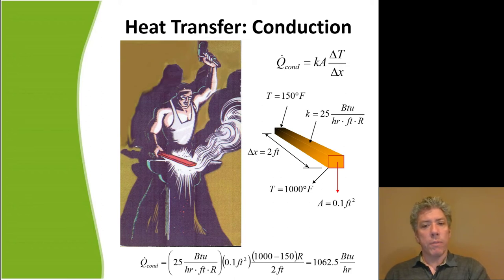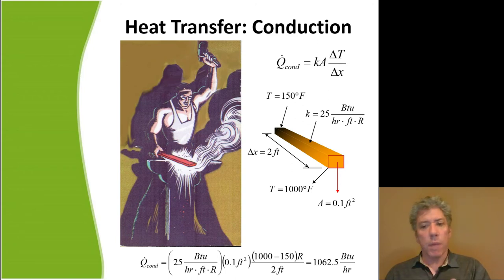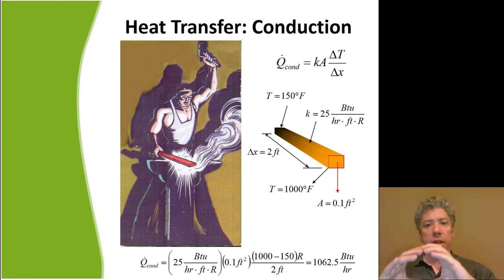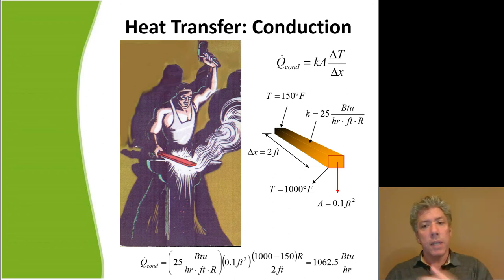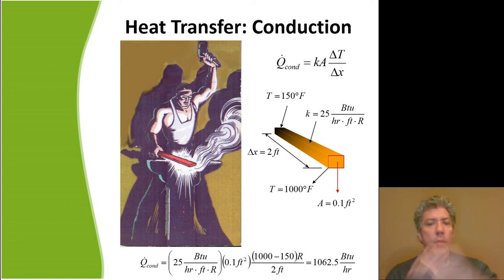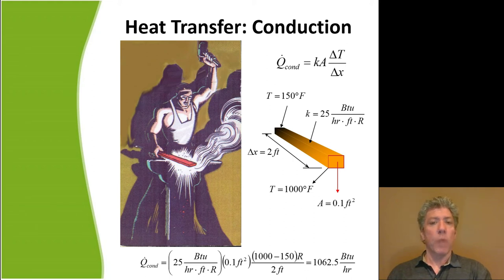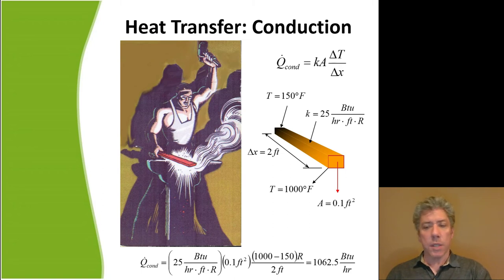What would the rate of heat transfer be? The cross-sectional area is about a tenth of a square foot and the length is two feet long. We're only looking at heat transfer in one direction along the length of the rod. If your intuition says isn't the air around it going to cool the bar down — yes, but we're ignoring that to focus on conduction. It used to be that the Caloric Theory proposed there was an invisible fluid that moved heat around, but of course that's been disproven.